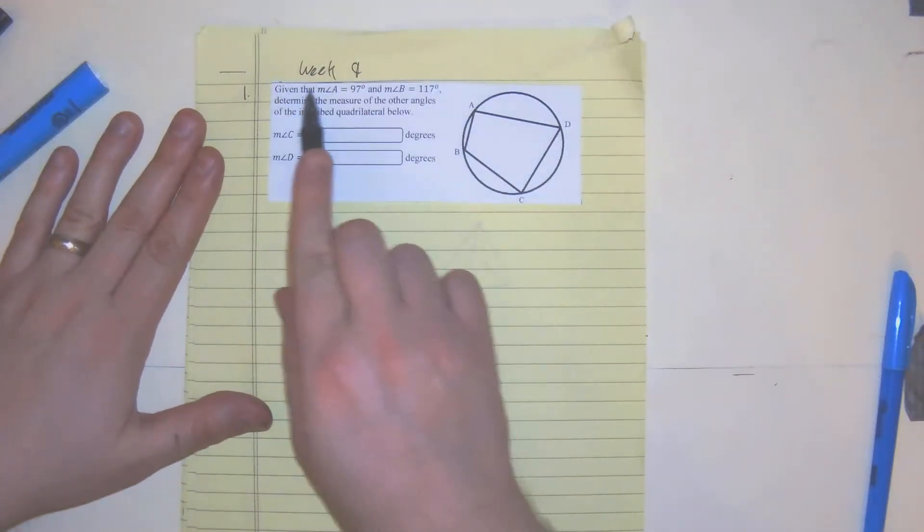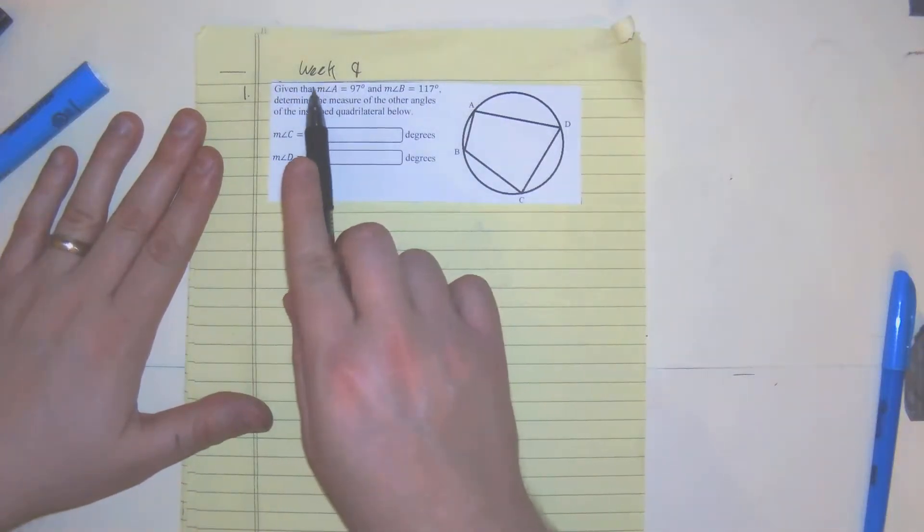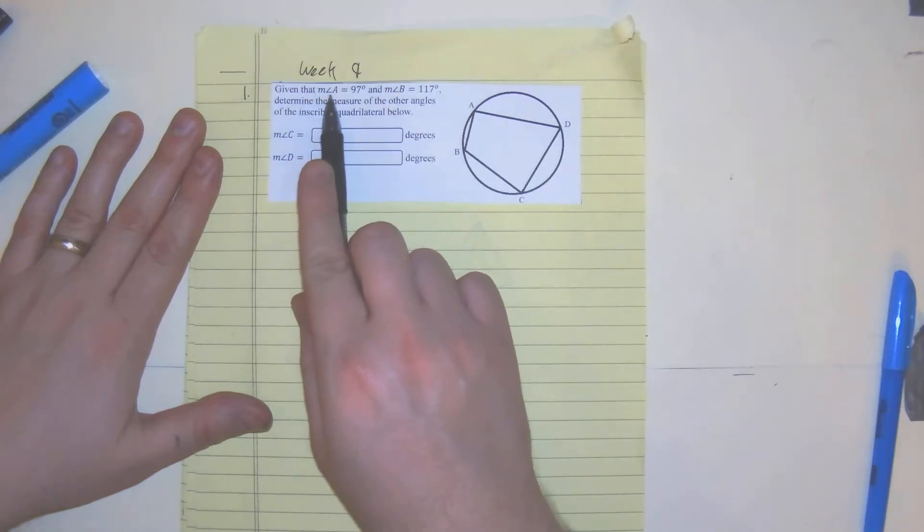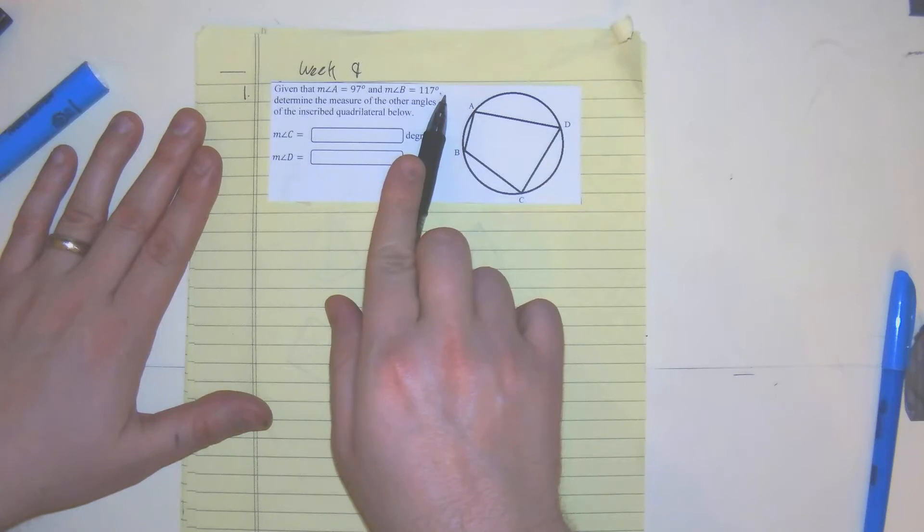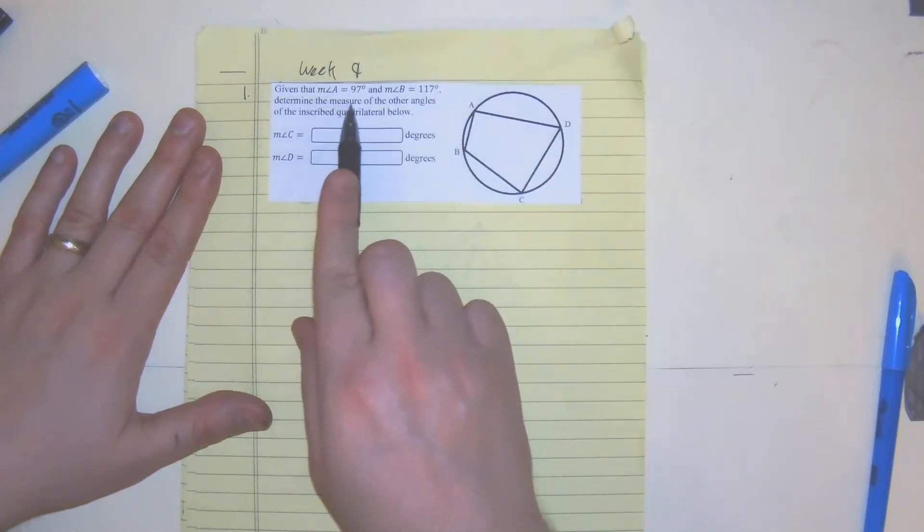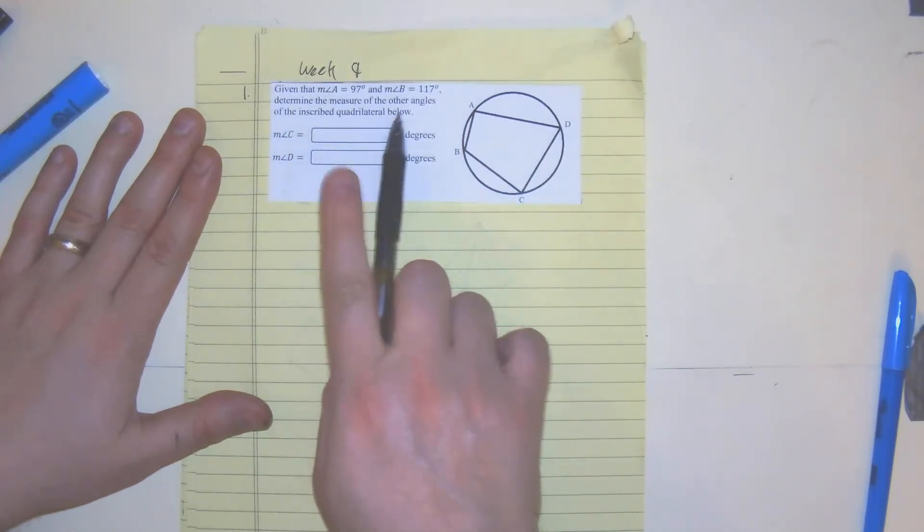We're on week 9, question 1, non-calculator. Given that the measure of angle A is 97 degrees and the measure of angle B is 117, we want to determine the measure of the other angles of the inscribed quadrilateral below.